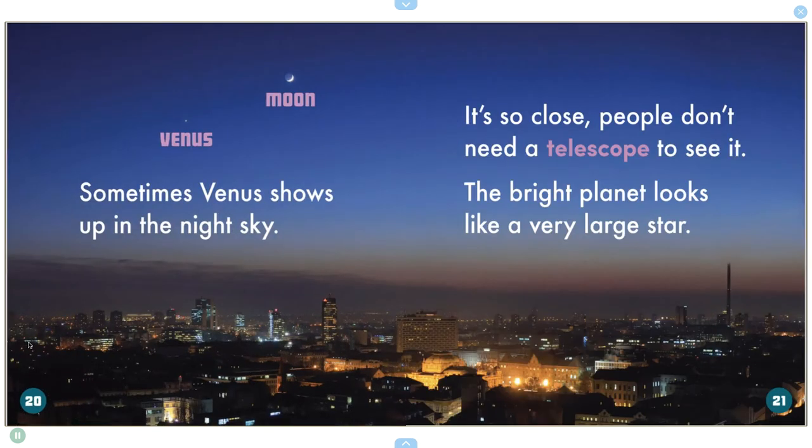Sometimes Venus shows up in the night sky. It's so close. People don't need a telescope to see it. The bright planet looks like a very large star.